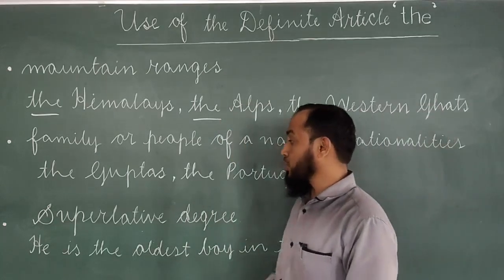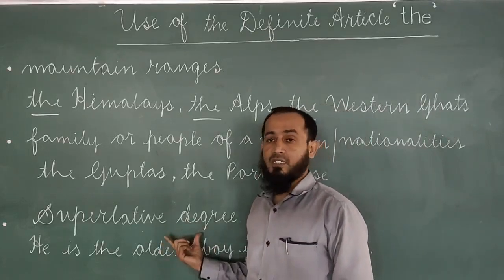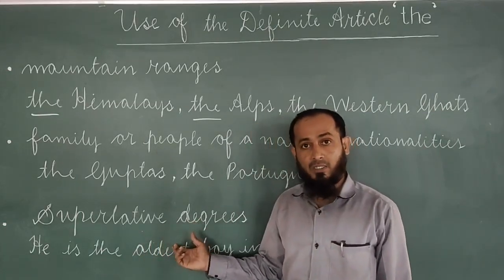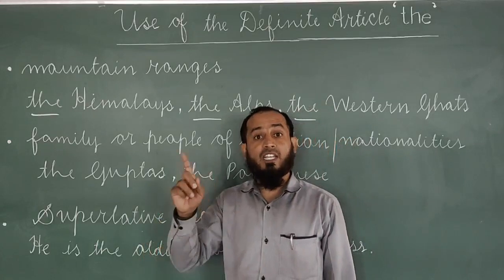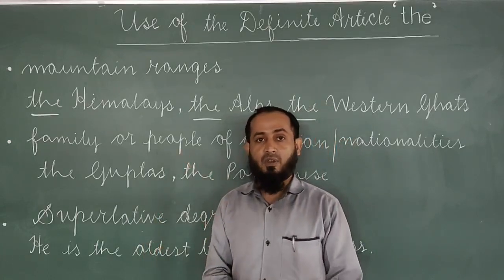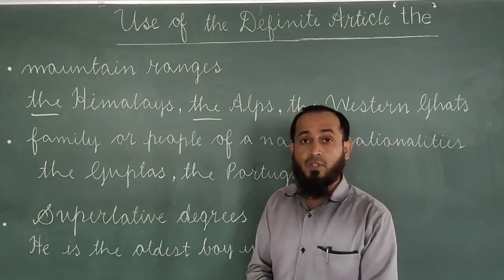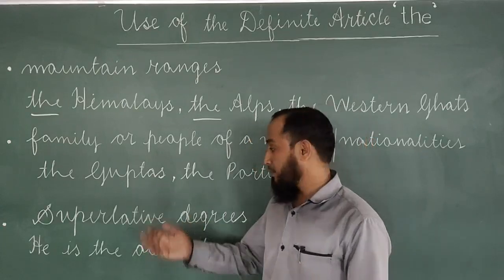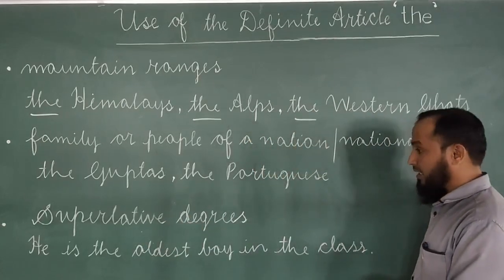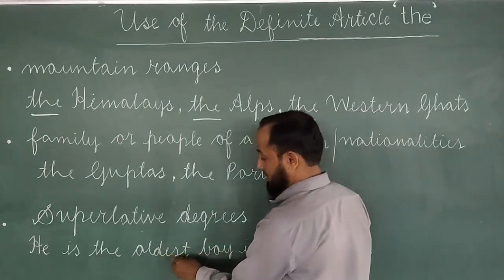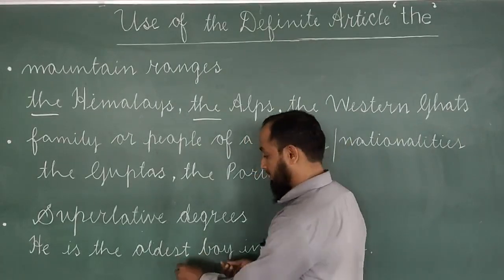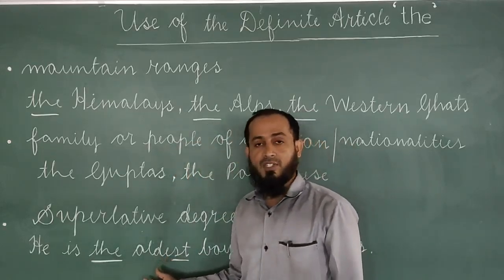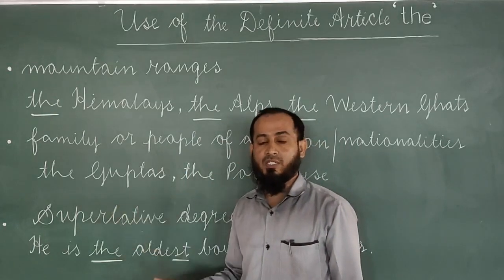Next: 'the' is used before the superlative degree. We already studied this during degrees of comparison. For example: 'He is the oldest boy in the class.' The '-est' ending indicates superlative degree, so before it we use 'the'. Other examples: the shortest, the tallest, the longest.